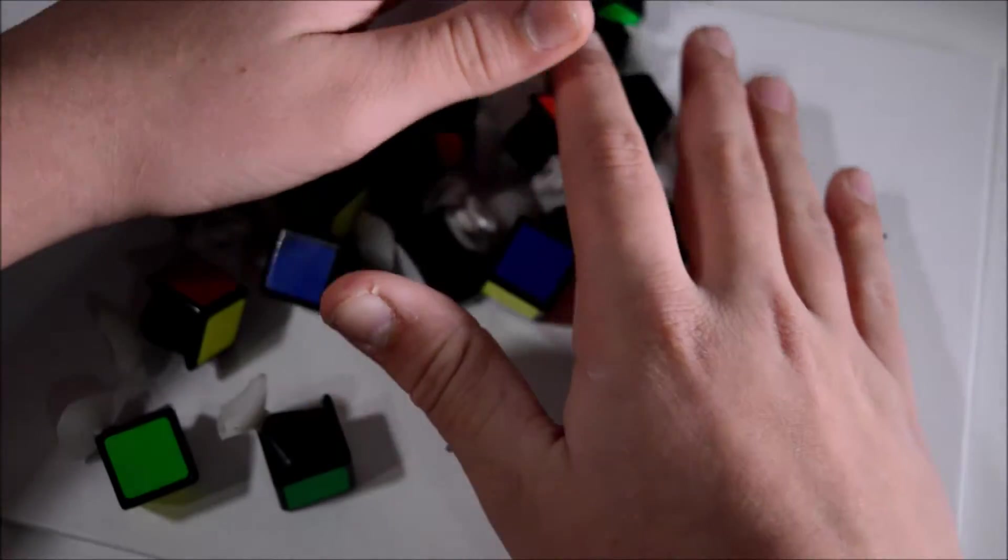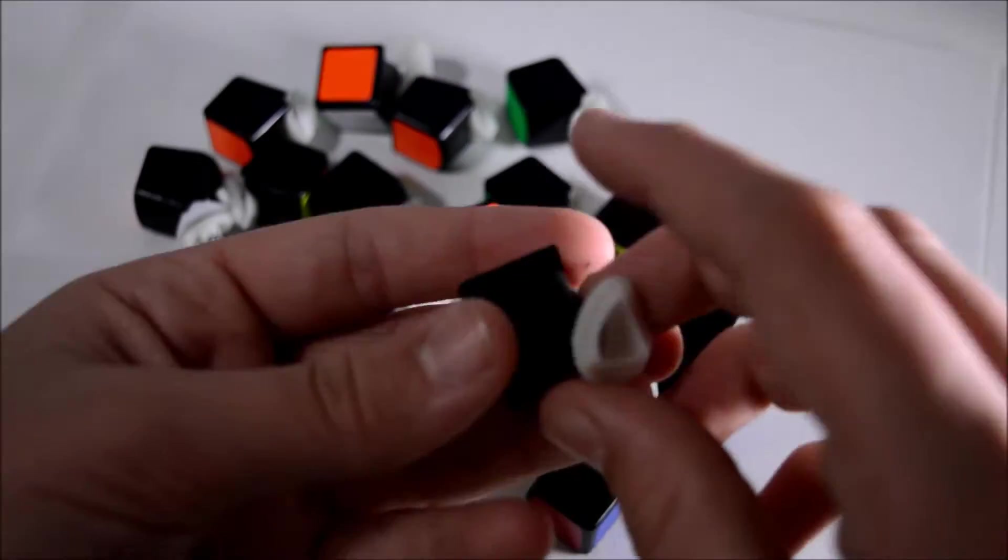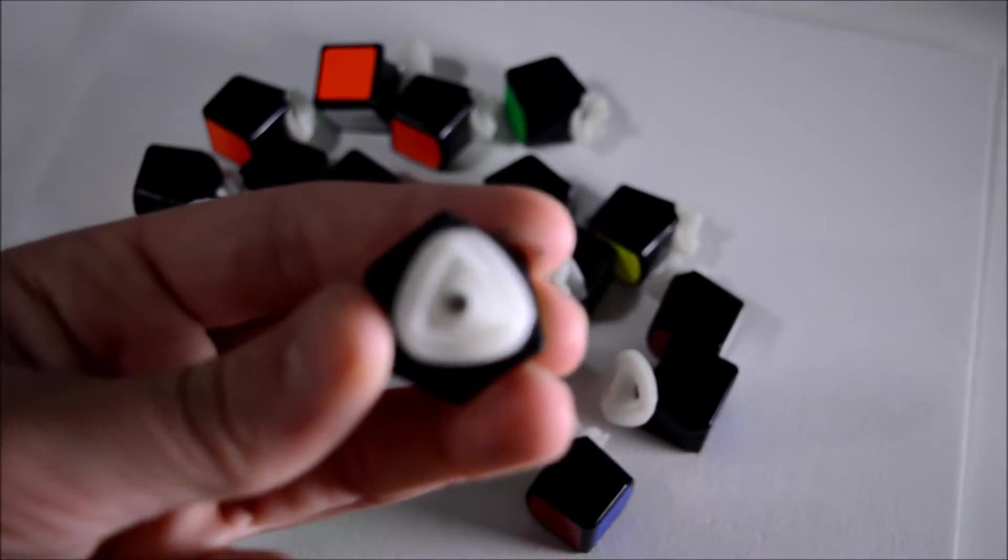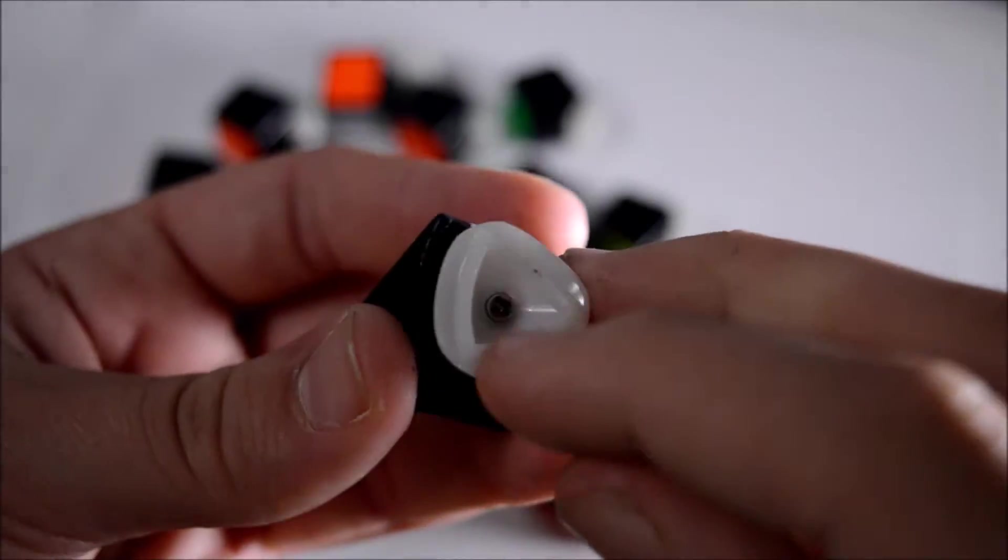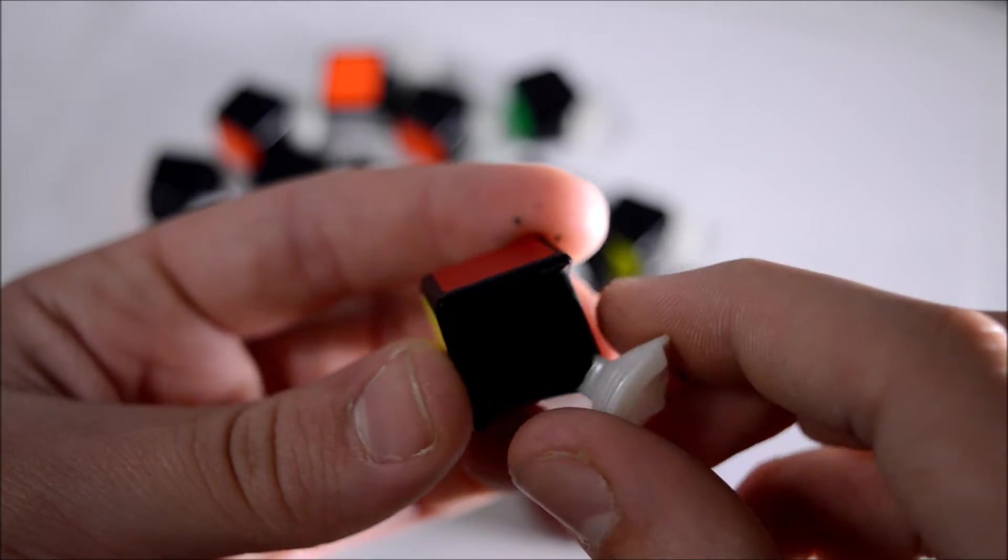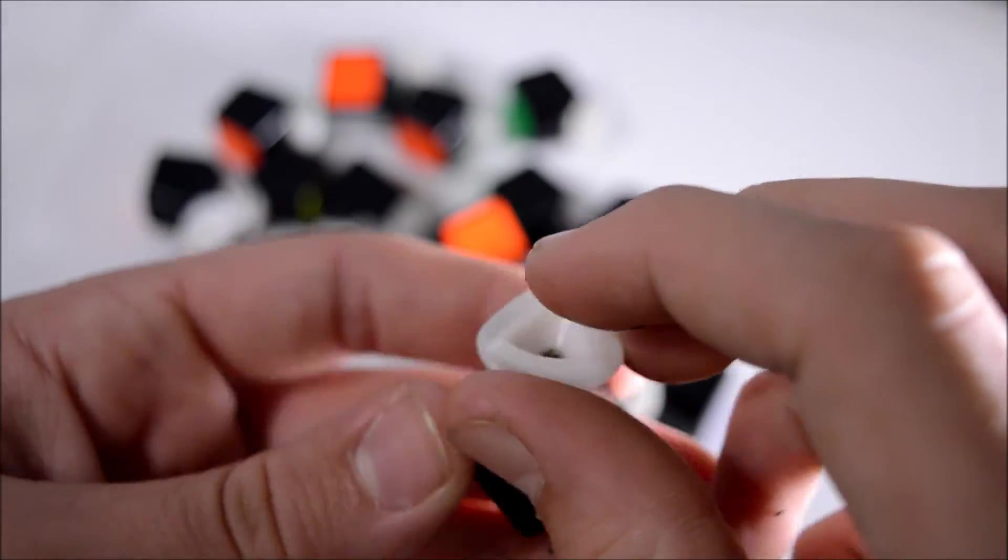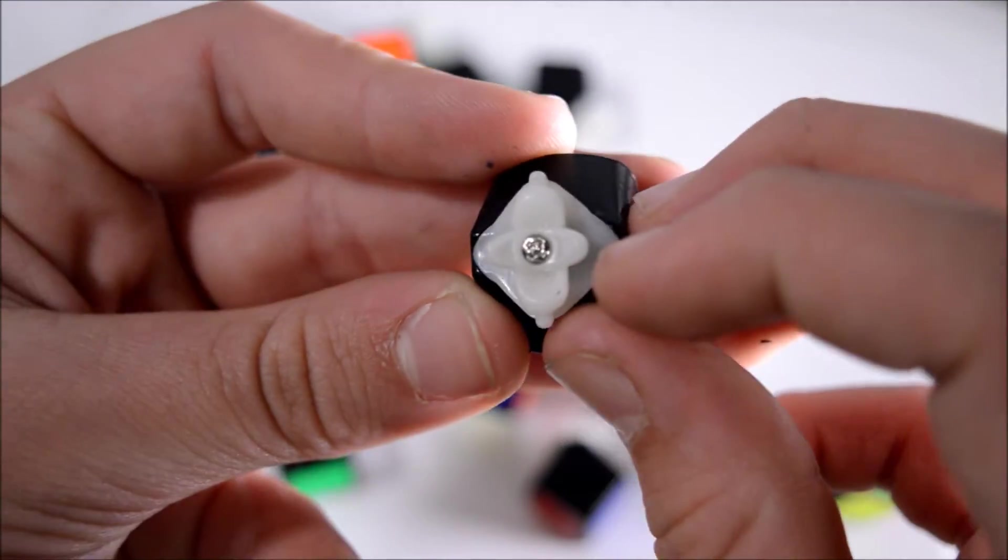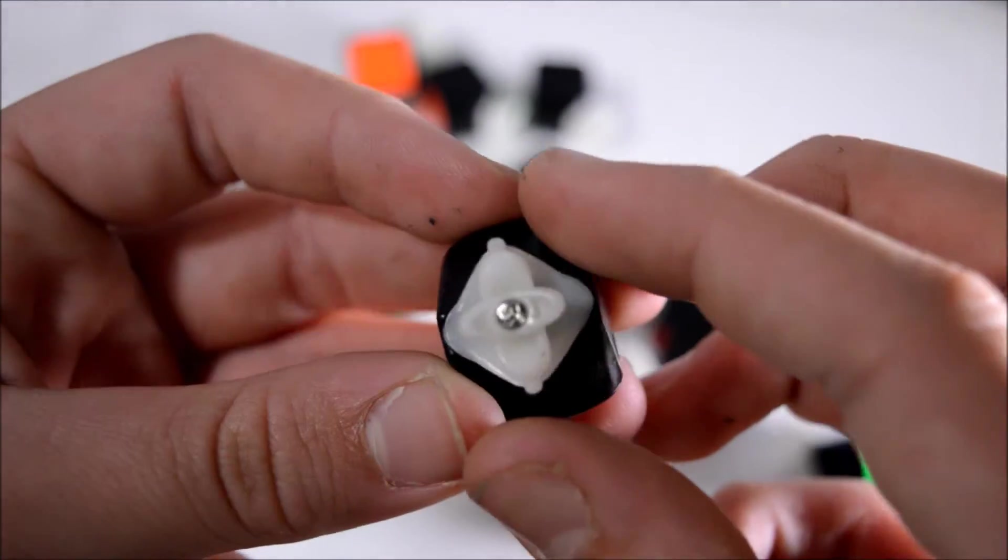What you're going to do, you're going to see these screws right here. These tiny little screws you're going to unscrew those all the way and take the stock off. You can do that with the corner piece just like that and the edge piece has a screw as well and you're just going to unscrew both of these all the way until they're all the way out.